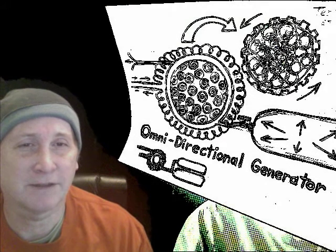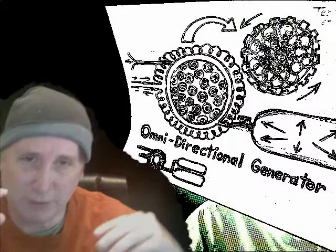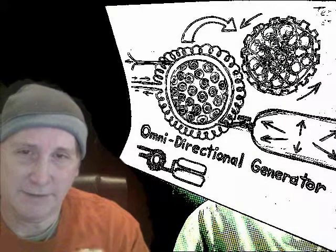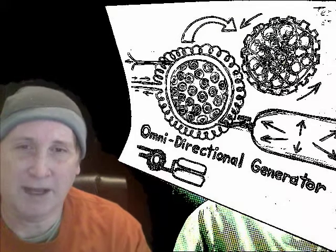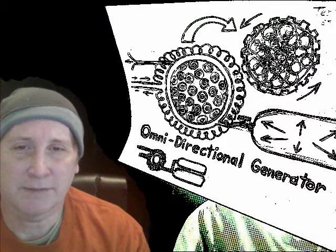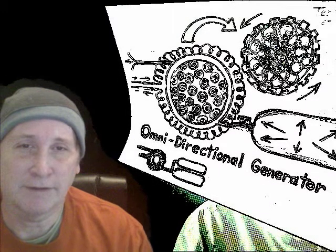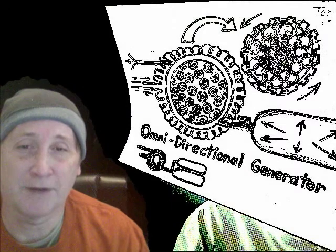I'd always had an idea of an omnidirectional generator using Tesla coils arranged in a spike to a core, which would probably be some kind of capacitor. Then electricity would come back out through the dimples in this metal sphere.